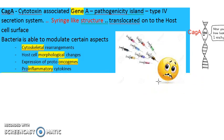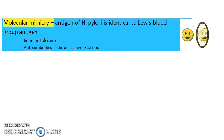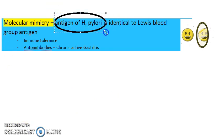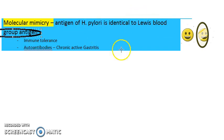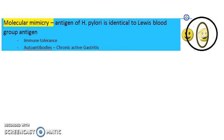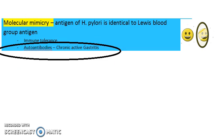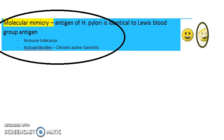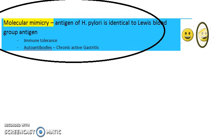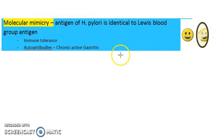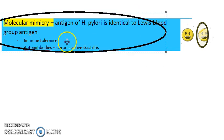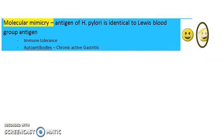The third point is molecular mimicry. The antigen of H. pylori is identical to the Lewis blood group antigen. Because it is so identical, there is immune tolerance and autoantibodies can be generated, causing chronic active gastritis. So chronic active gastritis can result from autoantibodies due to this molecular mimicry with the Lewis blood group antigen.